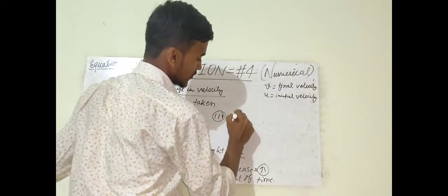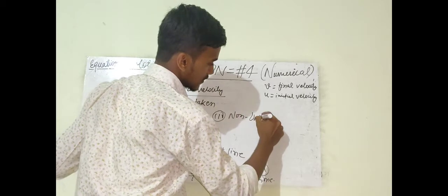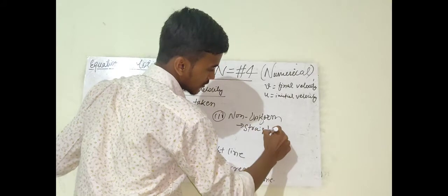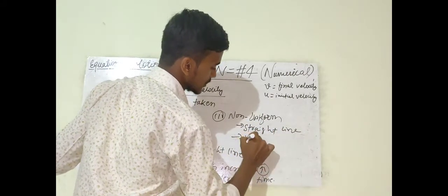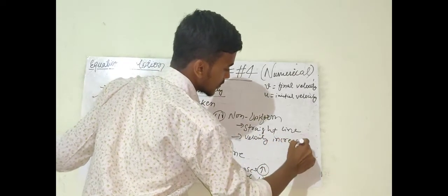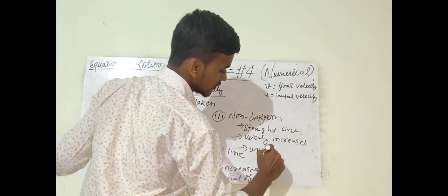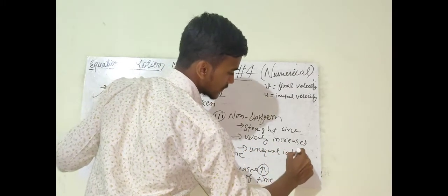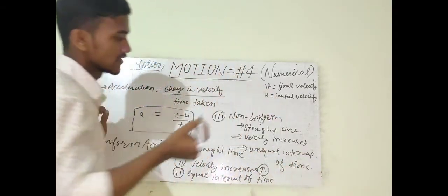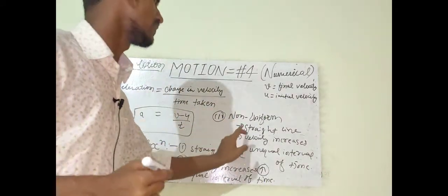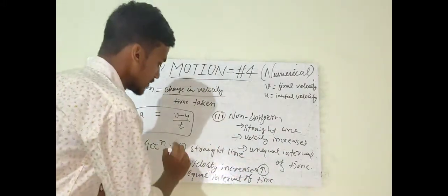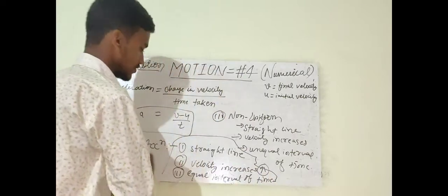The third concept is non-uniform acceleration. In non-uniform acceleration, the body also travels in a straight line and velocity also increases — that's where students get confused. The difference is the third point: the velocity increases with unequal intervals of time. So the definition is: a body is said to be non-uniform if it travels in a straight line when its velocity increases with unequal intervals of time. Just remember these three points and the definition is done.